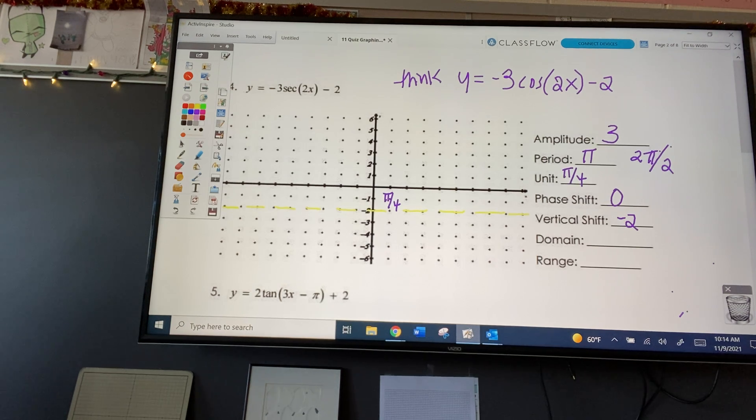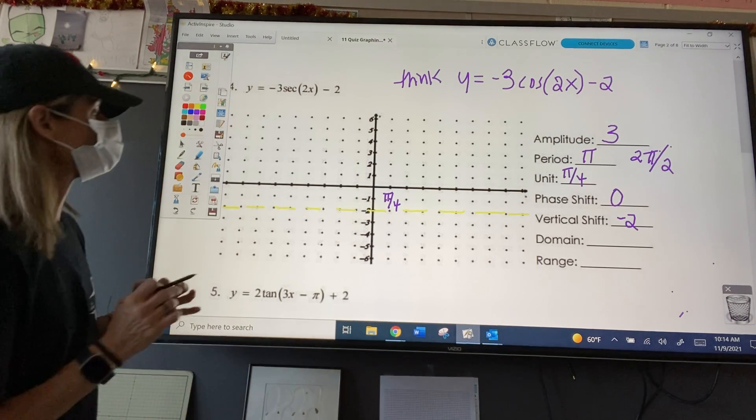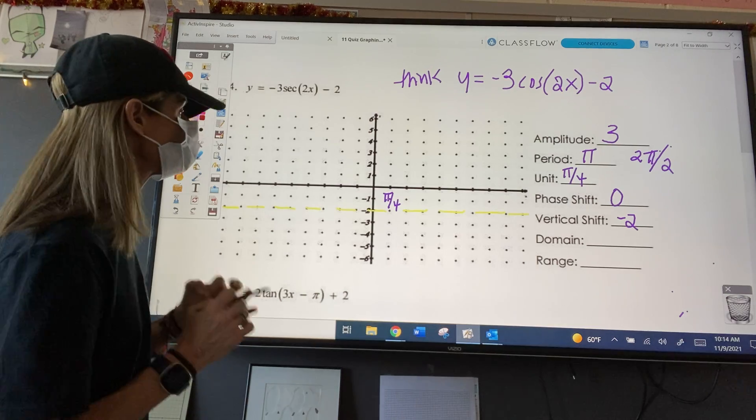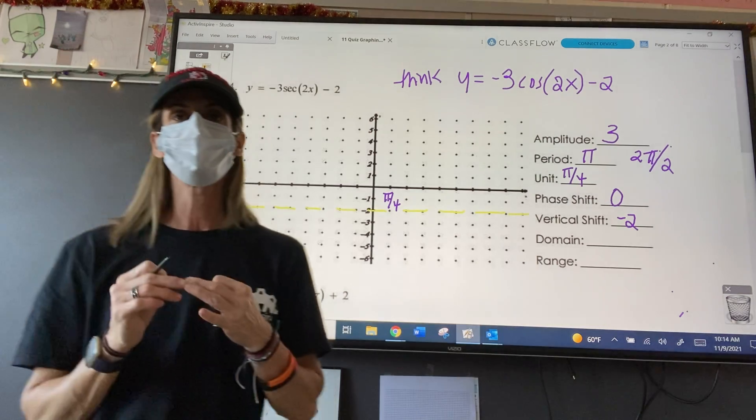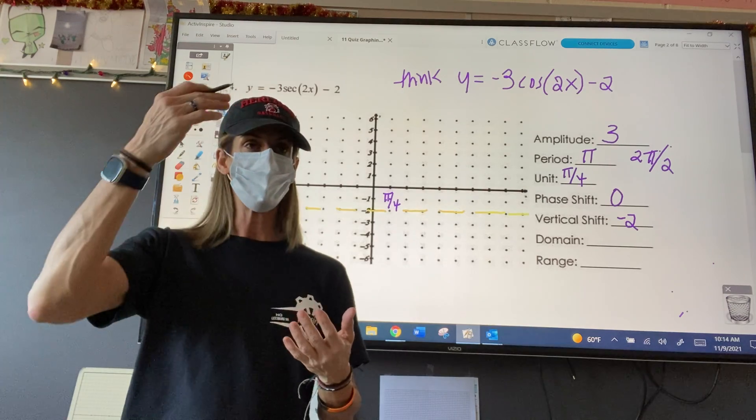Yes, because all the points are going to be shifted. Unless it's a full period. If it's a full period, then you don't have to do that like in the last problem. Oh, okay. Okay, so where are we at? We are graphing. We're thinking about graphing cosine. The parent function of cosine, the cosine of zero is one, right? So we start high.